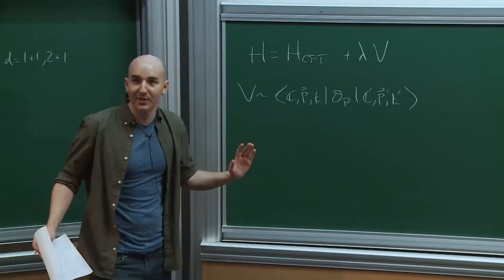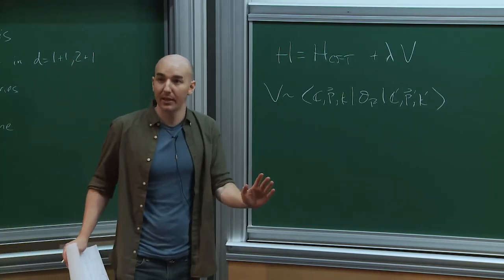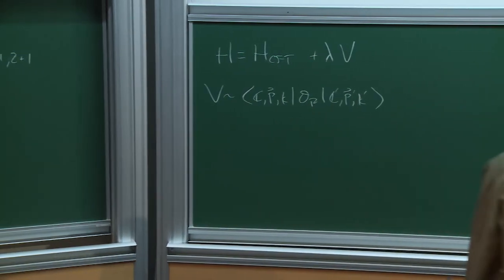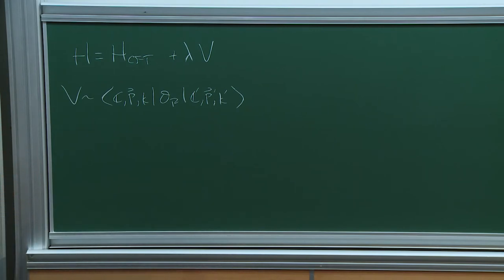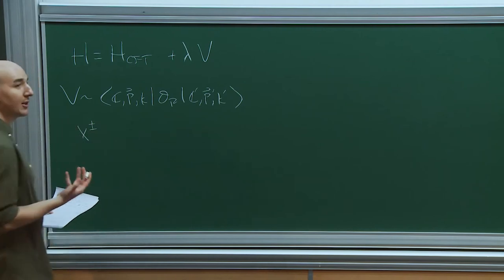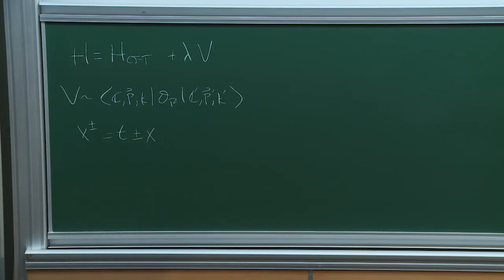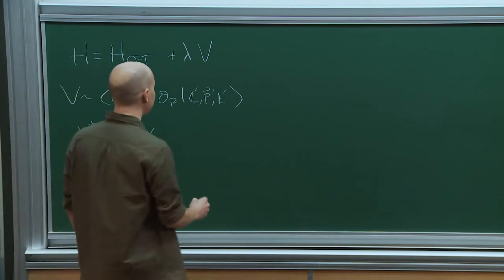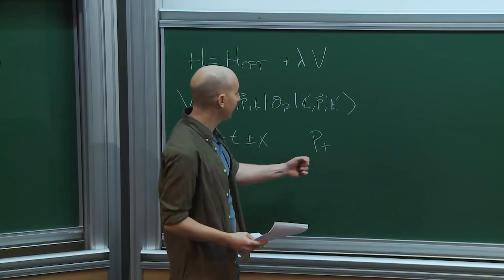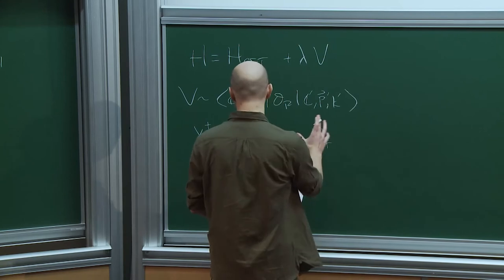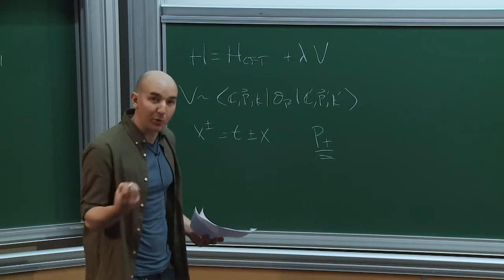Up to this point I've said nothing about quantization schemes. You can apply this Hamiltonian truncation method in any quantization scheme — equal time or light cone. But now we're going to choose to work in light cone quantization. We define light cone coordinates, choosing one spatial direction to be special, and define new coordinates T plus/minus X. The actual Hamiltonian we'll diagonalize is P-plus, the generator of translations in the X-plus direction. Really we care about Lorentz invariant observables, so the operator we want to study is M squared.